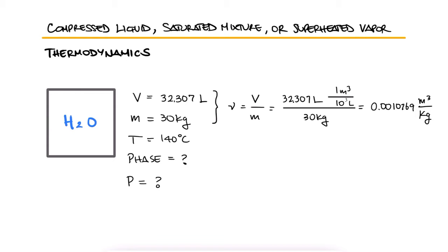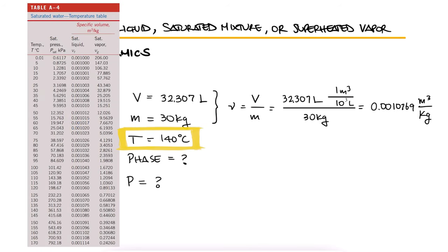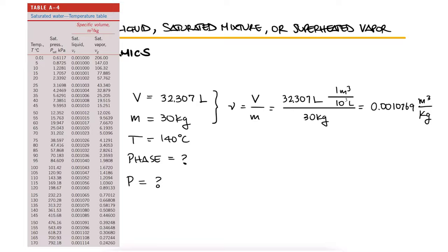Just like we did for the previous problem, we'll go to the saturated tables first, in this case the saturated table by temperature, since that is what we got, to find VF and VG for 140 degrees Celsius.